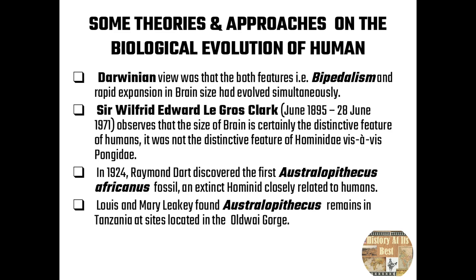Regarding theories and approaches, the Darwinian view — from Charles Darwin's two books 'The Origin of Species' and 'The Descent of Man' — held that both bipedalism and rapid brain expansion evolved in similar ways at the same time. Sir W.E. Le Gros Clark observed that the size of the brain is certainly the distinctive feature of humans, not the distinctive feature of Hominidae vis-à-vis Pongidae. In 1924, Raymond Dart discovered the first Australopithecus africanus fossil. Louis and Mary Leakey found Australopithecus remains in Tanzania at sites in Olduvai Gorge.